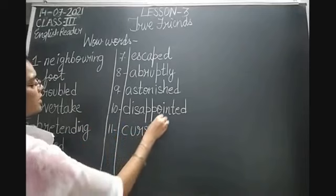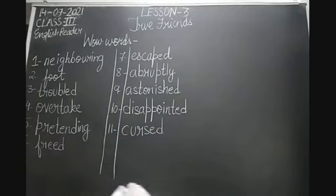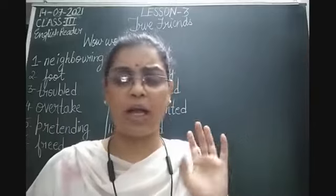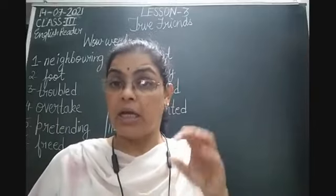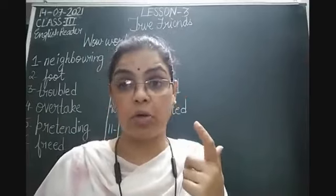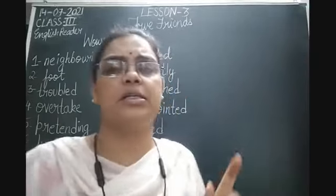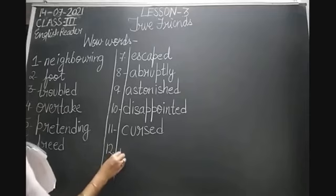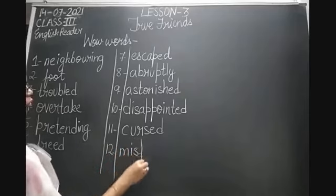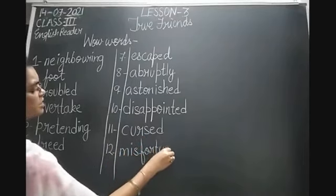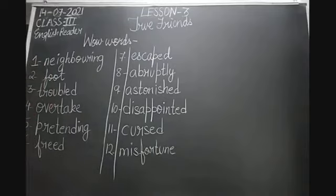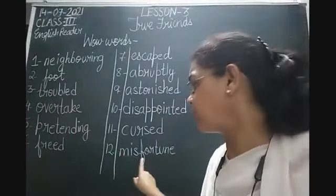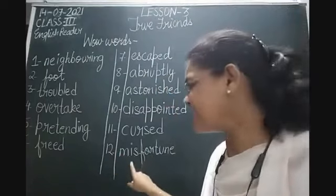The eleventh word is 'cursed' — C-U-R-S-E-D. Cursed means speaking bad words in anger. Kabhi kabhi humein kisi pe bahut gussa aa jaata hai, toh hum use bura bhala kehte hain — that is cursing. The twelfth word is 'misfortune' — M-I-S-F-O-R-T-U-N-E. Misfortune means ill luck or bad luck. Kismat kharaab hona — fortune matlab kismat, aur mis- gives it a negative meaning, so misfortune means bad luck.